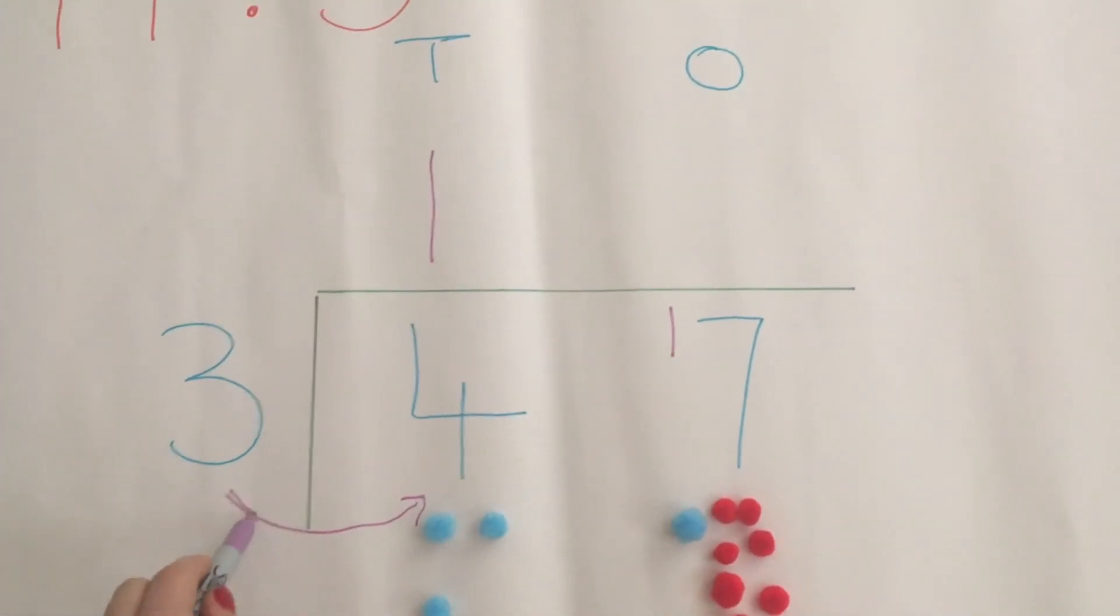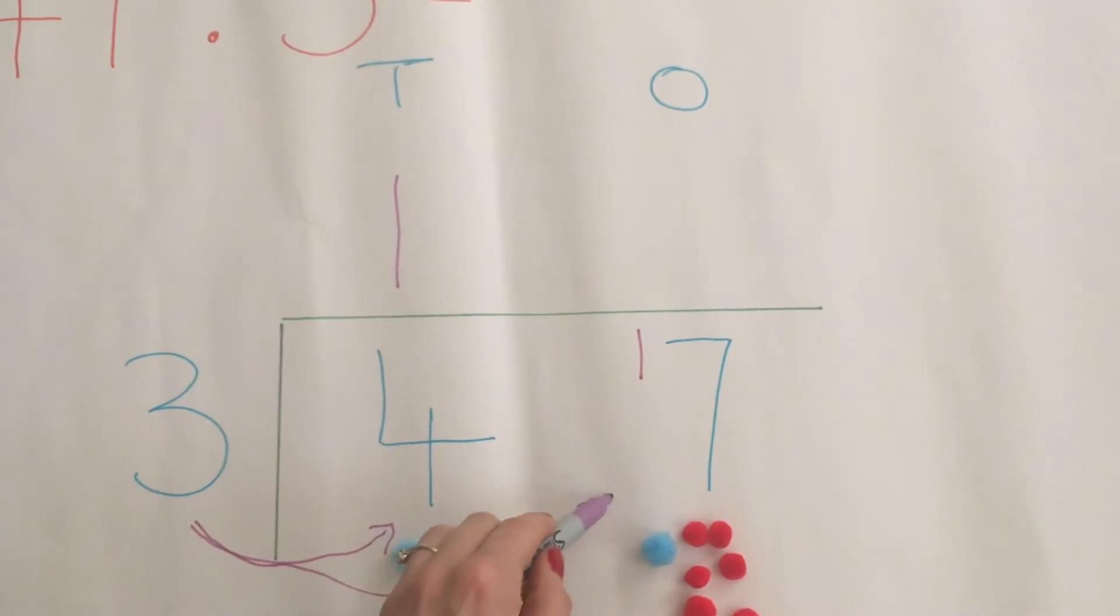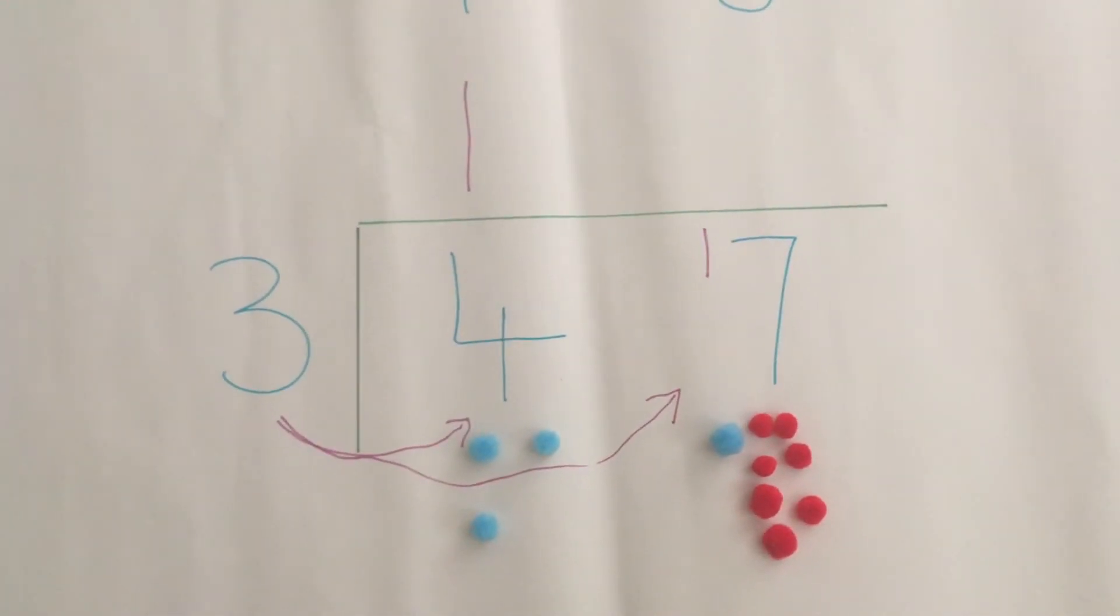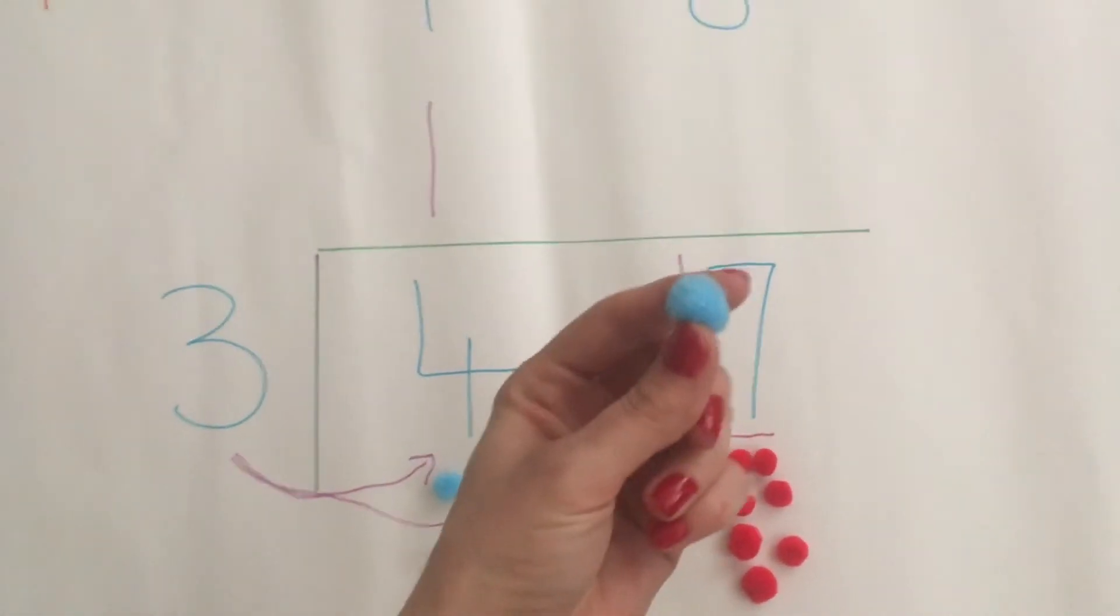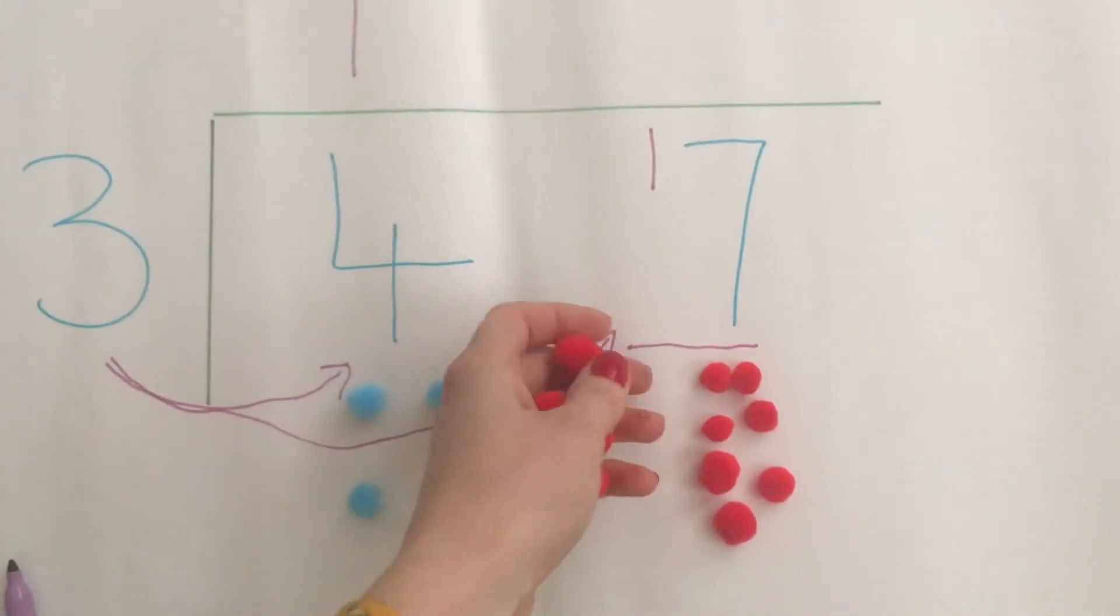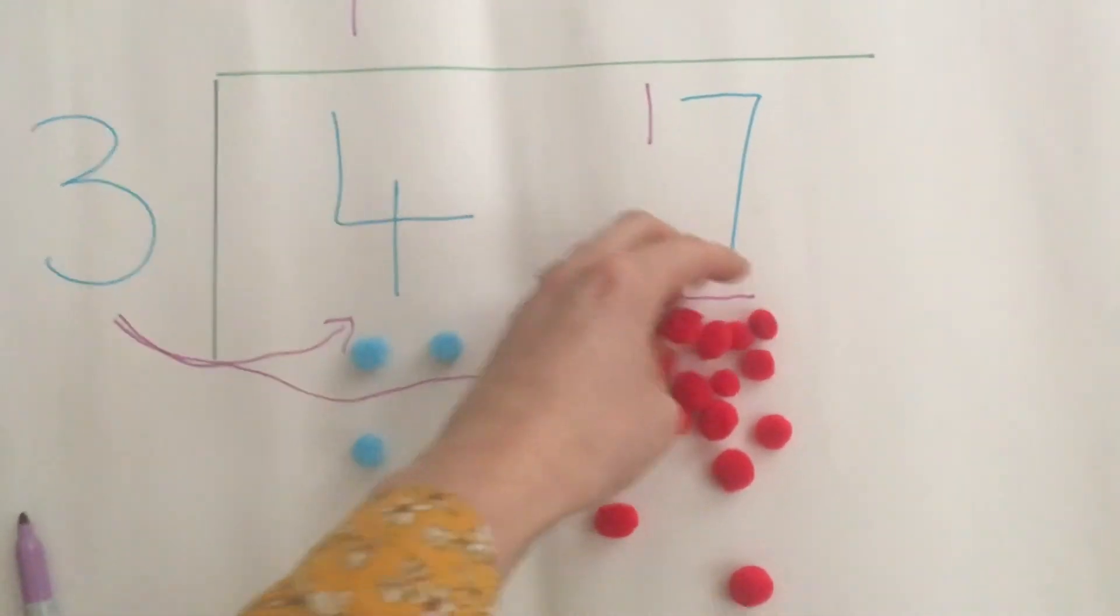Now that I'm looking at my ones column, I need to find out how many times the number 3 goes into 17. So I need 17 red pom-poms. So I'm going to exchange this blue one for 10 red ones so that I have 17 ones in front of me.